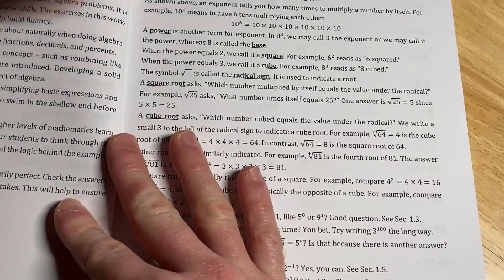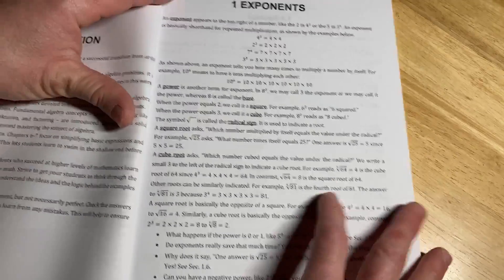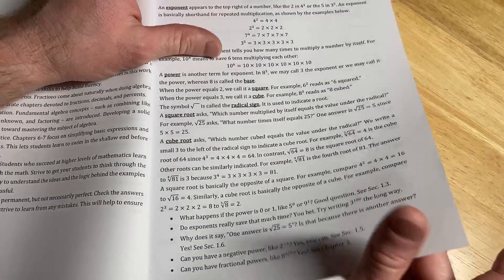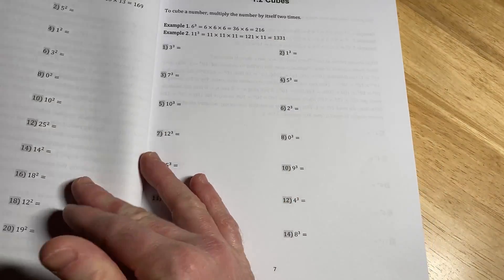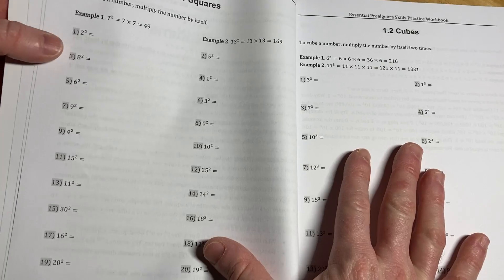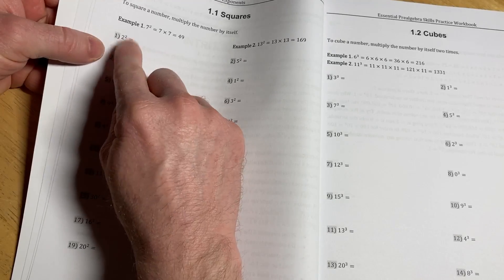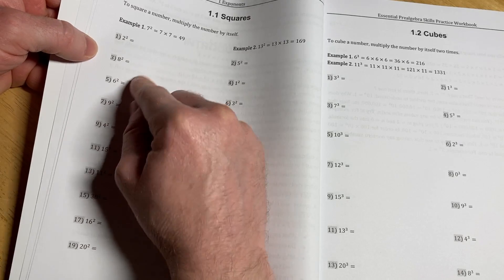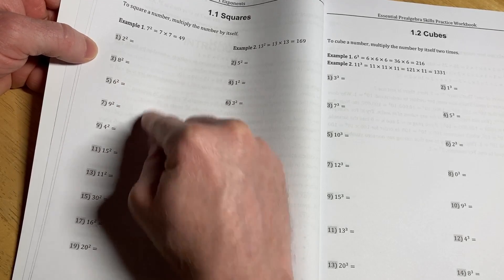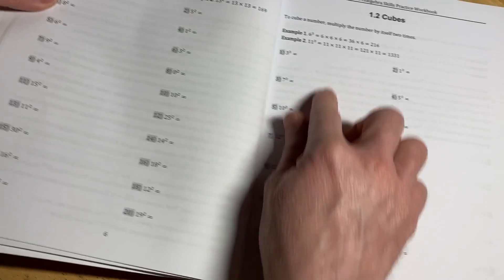How it works is, you read the book, especially if you're using this for self-study. You read the book, you notice things are in bold. Chris does a really good job of explaining everything, and then that's it. Look at this. You've got tons of problems, and you can write in the book, so you can just get better. 2 squared is 4, 8 squared is 64, 6 squared is 36, 9 squared is 81. So you just go through, fill everything out. Then you've got cubes here.